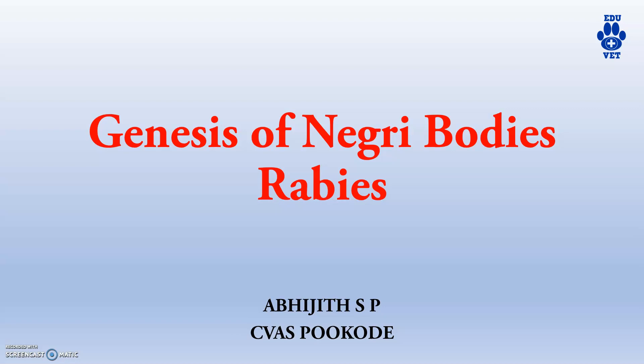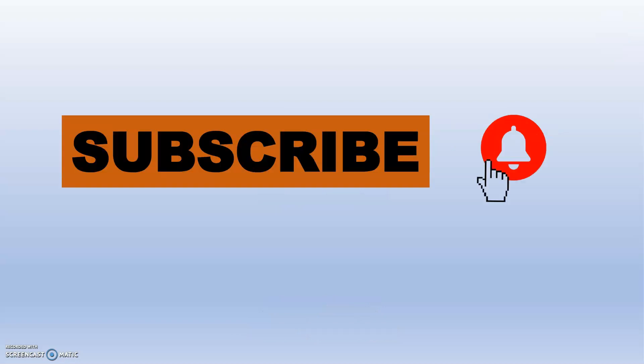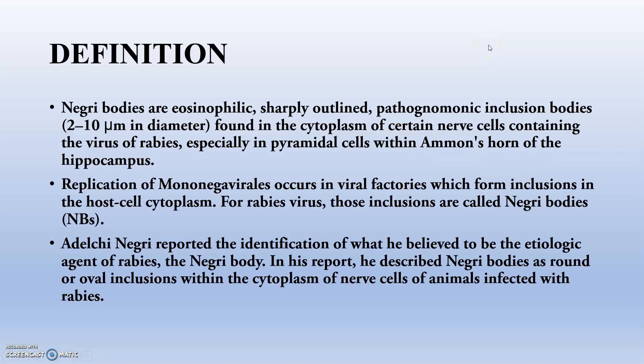So how Negri bodies are forming, in which disease they are found, in which cells, and what is their staining capacity — all of this will be covered. We have done a video discussing about the genesis, the staining capacity, and all the basic details of Negri bodies. So stay tuned and please subscribe to this channel and hit the bell icon for more updates. Moving to the first and most important part: the definition.